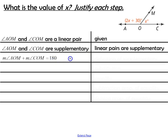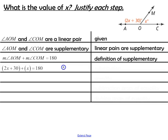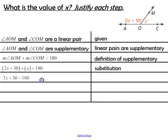Then we can say the measure of angle AOM plus the measure of angle COM equals 180, because that's the definition of supplementary. That leads us to substitute our values: the measure of angle AOM is 2x plus 30, and the measure of angle COM is x, so by substitution we write that equation. Next, we combine like terms: 2x plus x gives us 3x plus 30 equals 180. This step is simplifying.